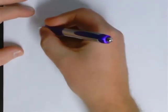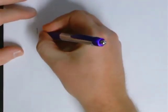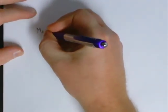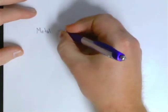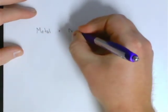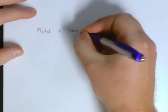Here's a quick lesson on writing ionic formulas. These are ionic compounds, and they're always going to involve a metal and a non-metal. That's one of the first important things to understand about these compounds.